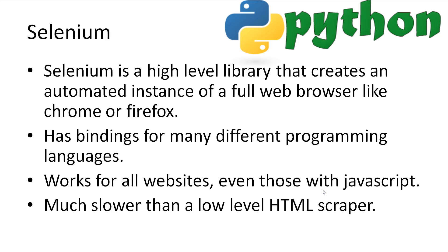And now Selenium. Selenium is what we used in the last tutorial for creating our LinkedIn bot. Selenium is a high-level library that creates and automates an instance of a full-fledged web browser like Firefox or Chrome. The library has been around for some time now and has bindings for many different programming languages. The best benefits of using Selenium is that it's easy to learn and handles websites that use JavaScript and Node.js. However, the big downside is that it can be very, very slow compared with a low-level HTML scraper like Scrapy.